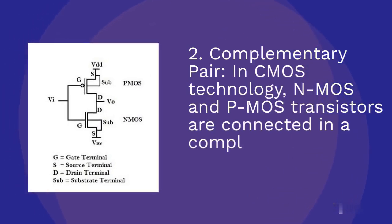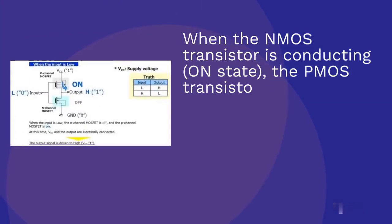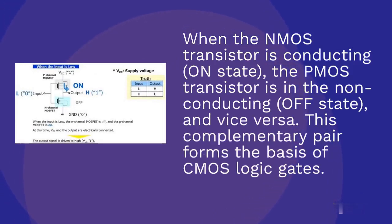Complementary Pair: in CMOS technology, N-MOS and P-MOS transistors are connected in a complementary fashion. When the N-MOS transistor is conducting on-state, the P-MOS transistor is in the non-conducting off-state, and vice versa. This complementary pair forms the basis of CMOS logic gates.